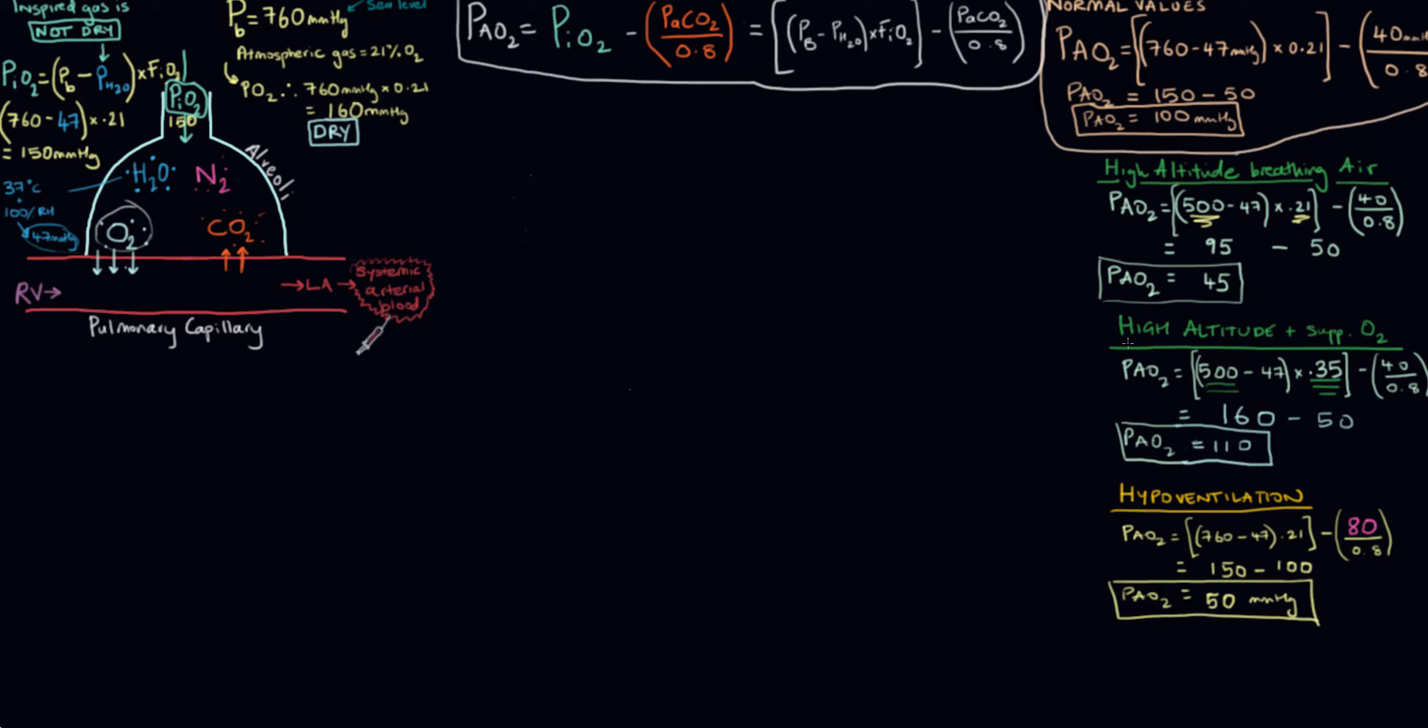Now here's the situation where they're at the same altitude, our barometric pressure is 500, but now we've given them some supplemental oxygen to breathe. So now they're breathing 35% oxygen rather than 21% oxygen. And you can see that by adding supplemental oxygen, we've been able to increase their alveolar PO2 back up to a normal level.